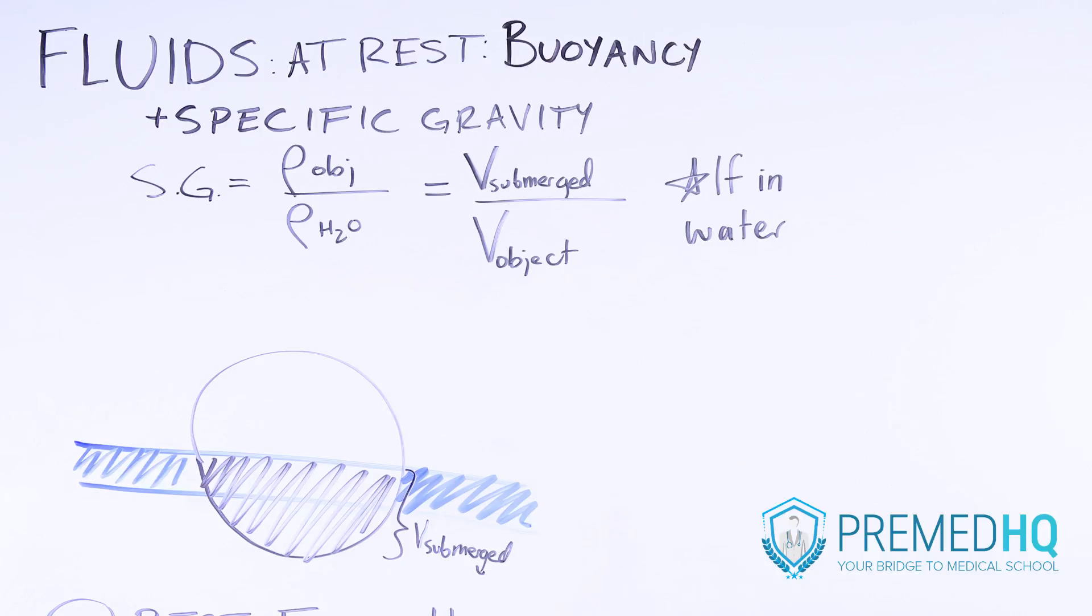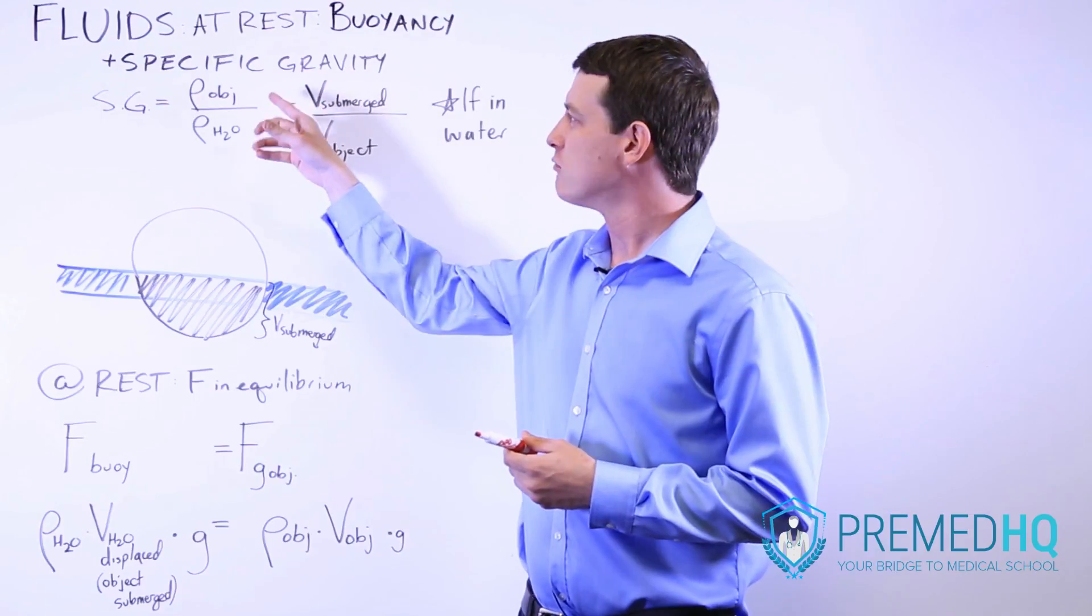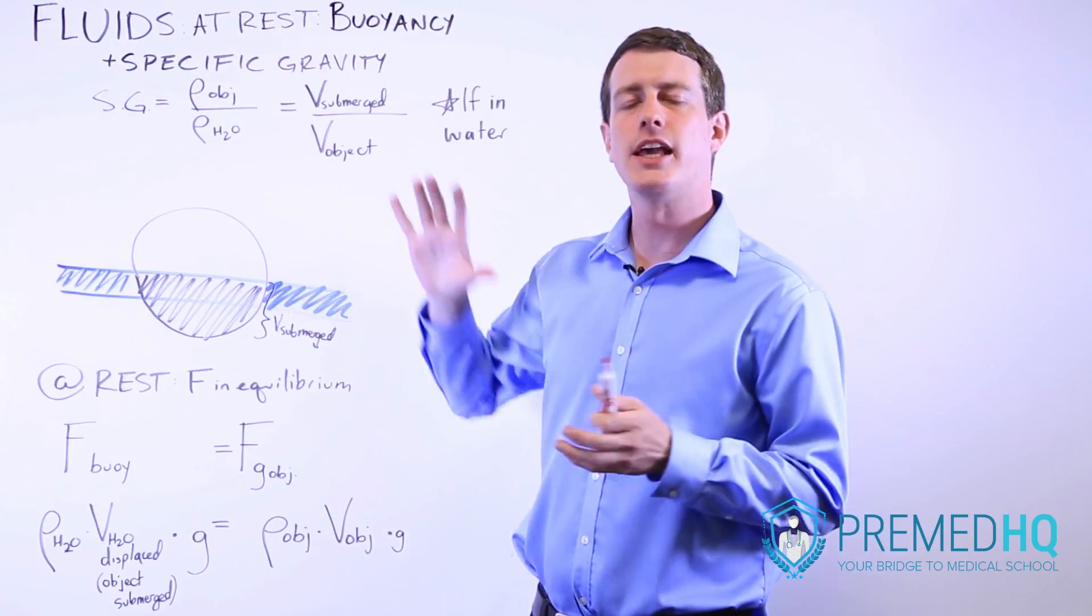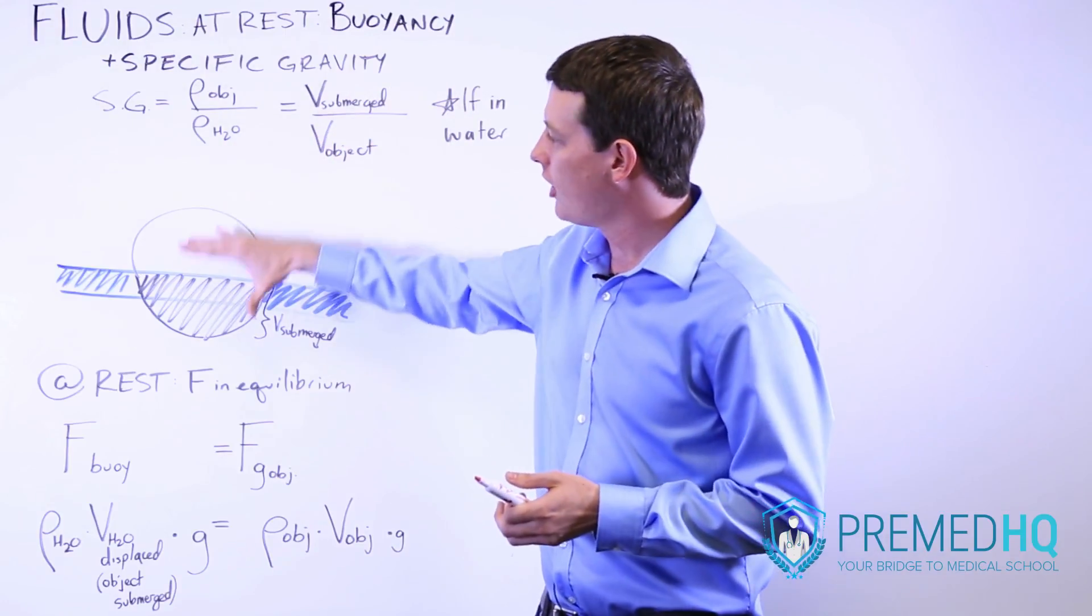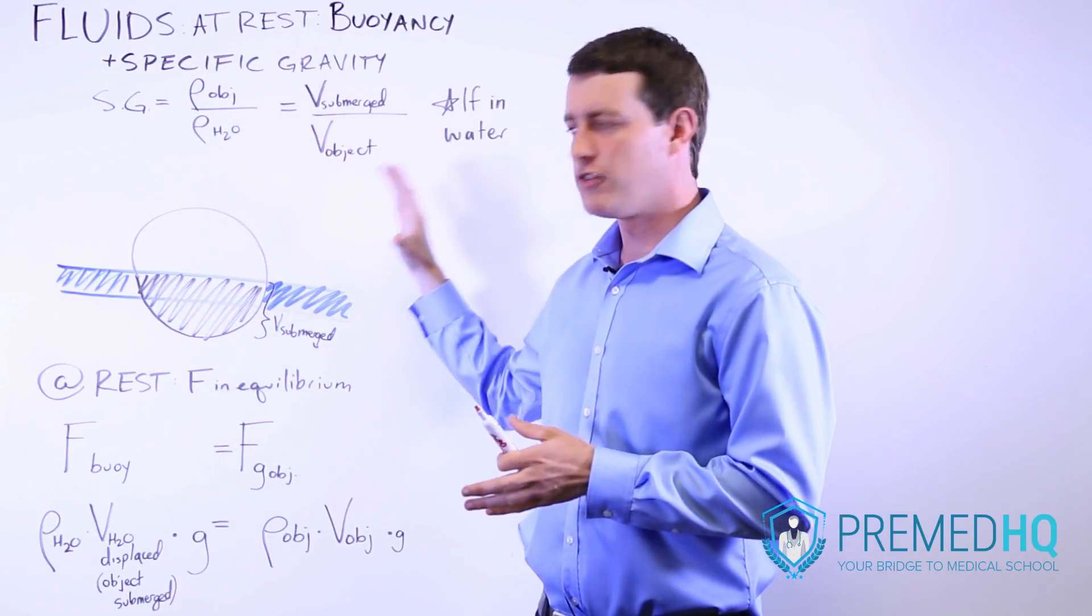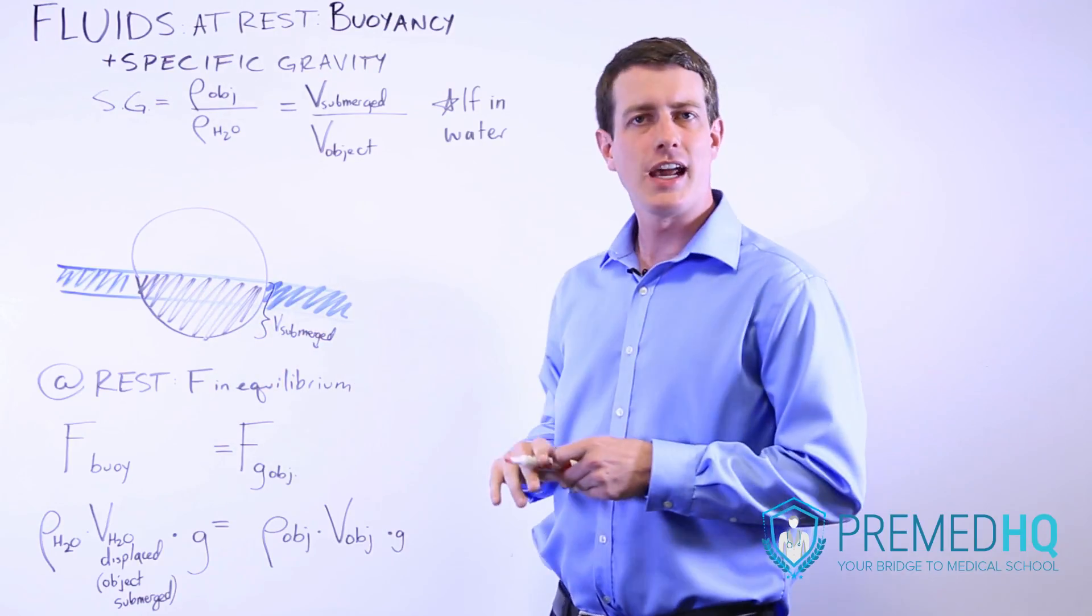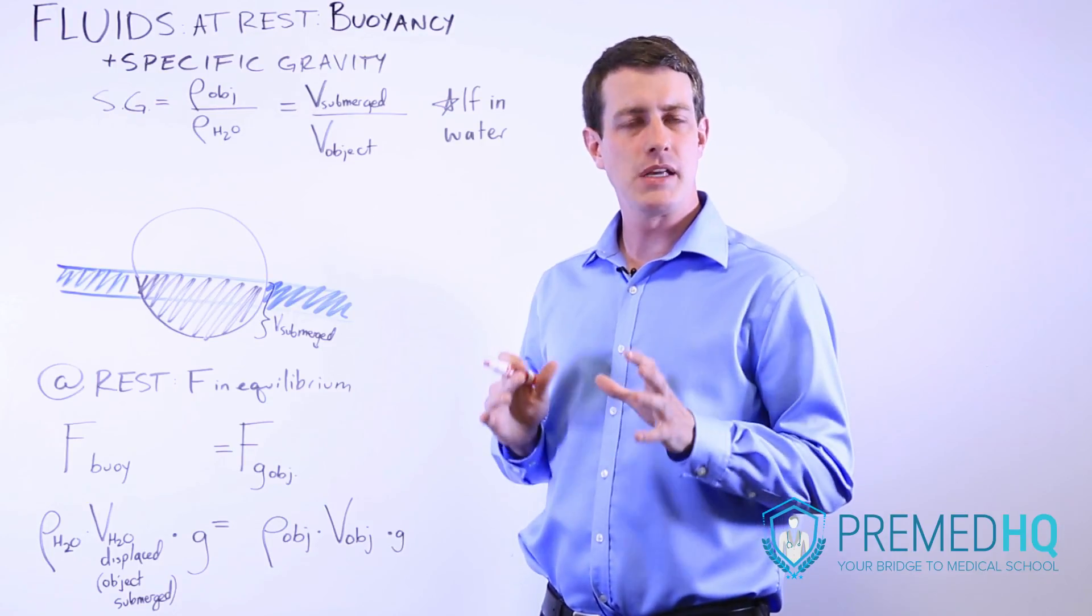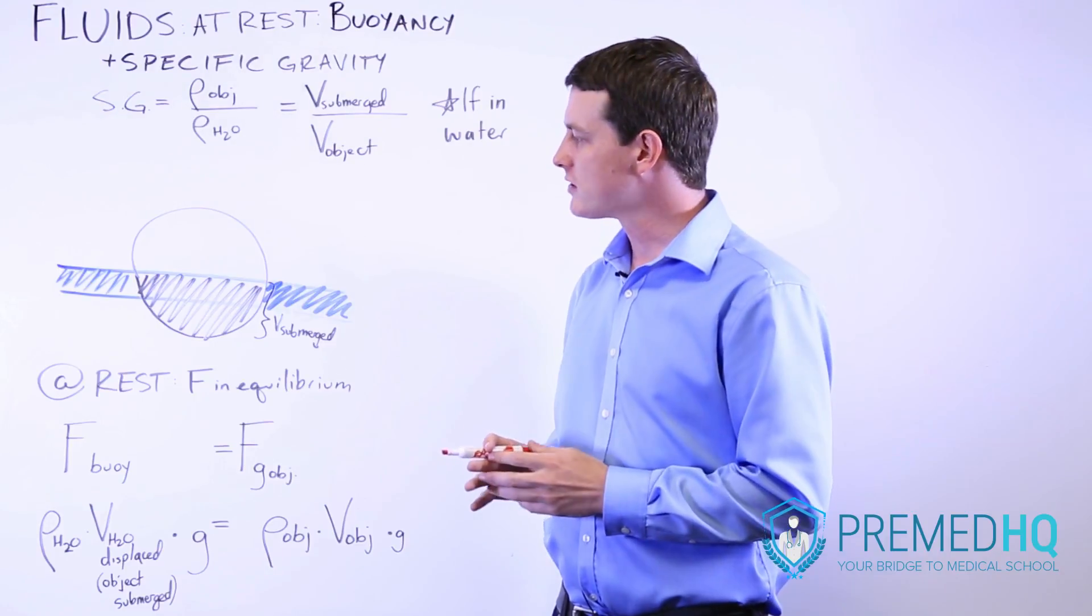So in order to understand this relationship, why the specific gravity, which is at its root a ratio of densities, can also be used as a ratio of the amount of the object that is submerged versus the volume of the object in total, we have to understand that a floating object is a system in equilibrium, which means that the upward force is the same as the downward force.